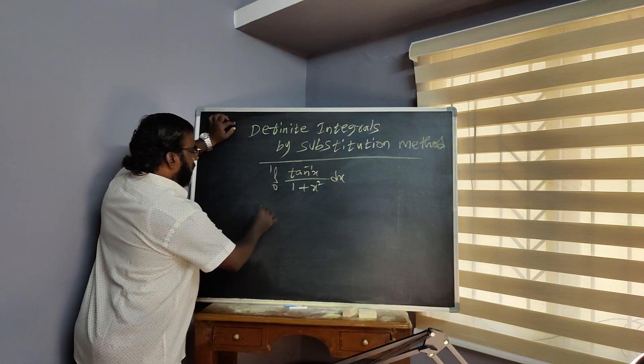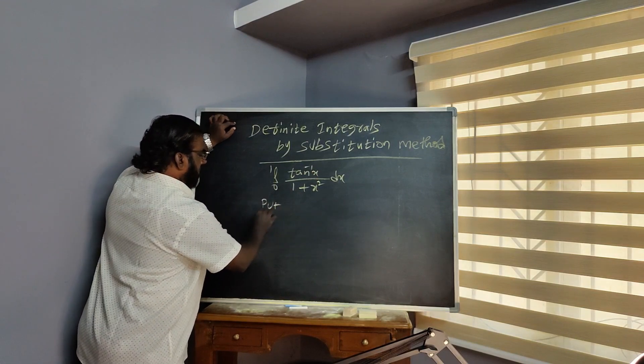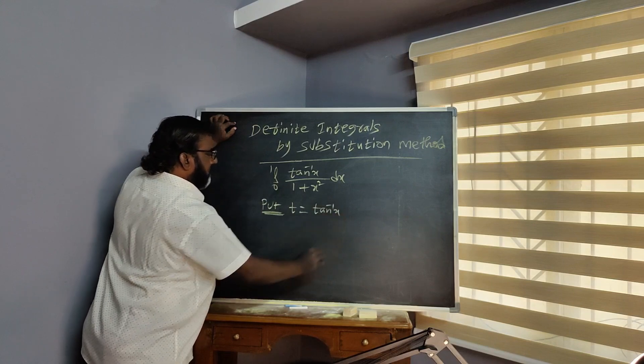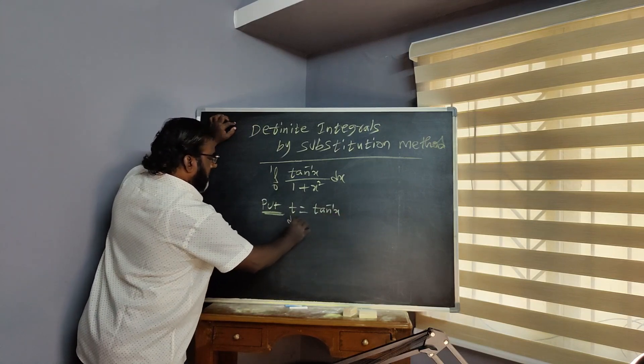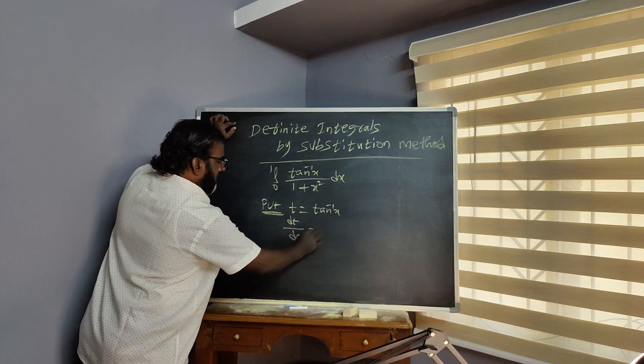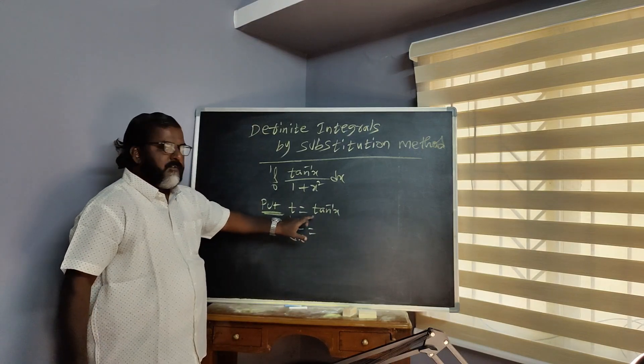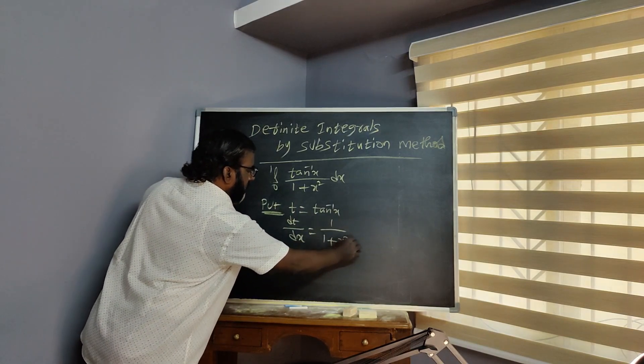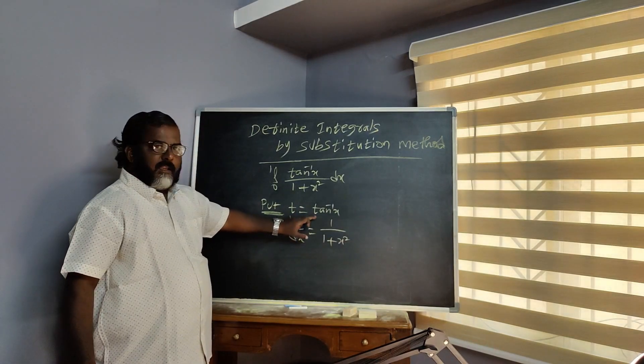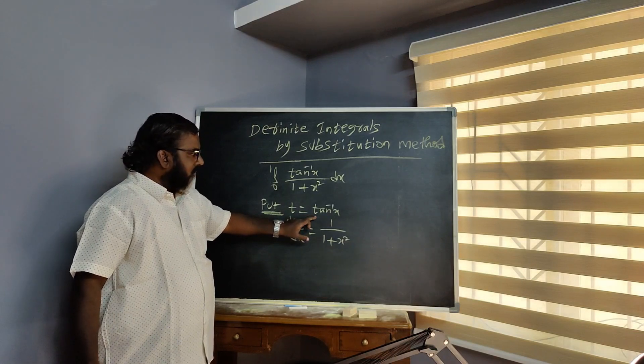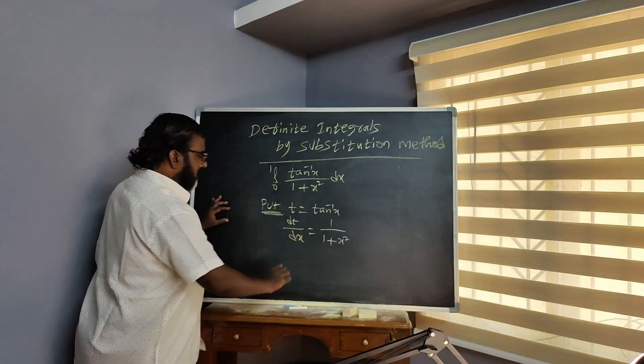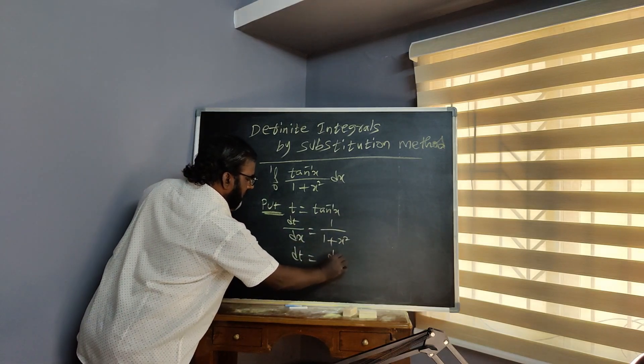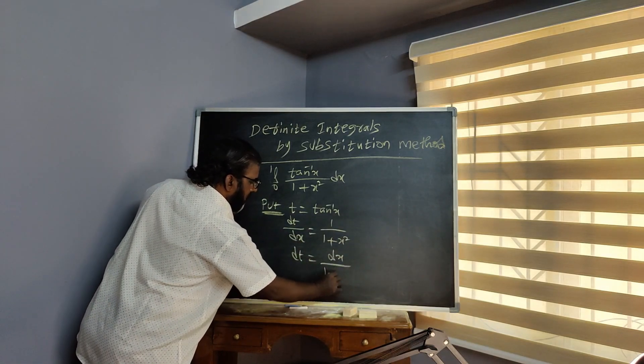This is a substitution method. Put T is equal to tan inverse X. Then dT by dX, tan inverse X differentiated is 1 by 1 plus X square. Cross multiply: dT is equal to dX by 1 plus X square.